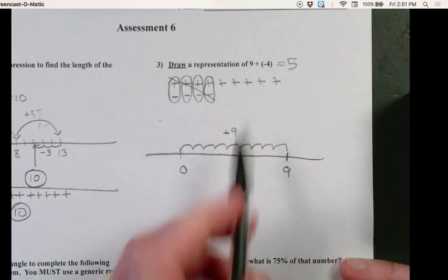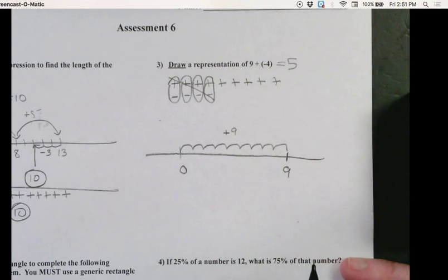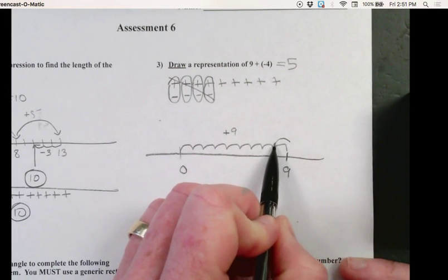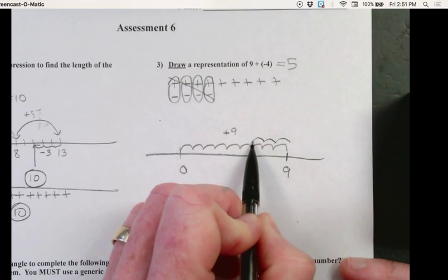Then he went backwards 4 units, so in the negative direction. So we went 1, 2, 3, 4.